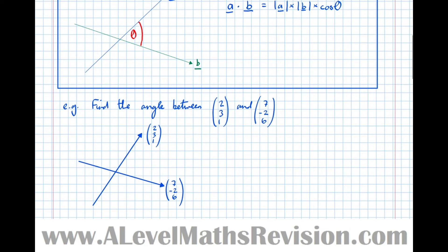So (2, 3, 1) dot (7, -2, 6) equals 2 times 7, which is 14, minus 6, plus 6, which equals 14. So that's one of the things that we need.